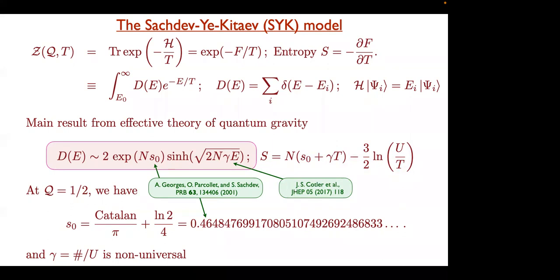To get this factor you need the full SYK. This sinh factor is actually far more universal — it applies to all kinds of things. It comes from JT gravity. I don't know any other way to do it; that's the way everyone has done it. Even the condensed matter side has done it using this gravitational theory. Basically JT gravity, or what amounts to gravity, gives it to you.